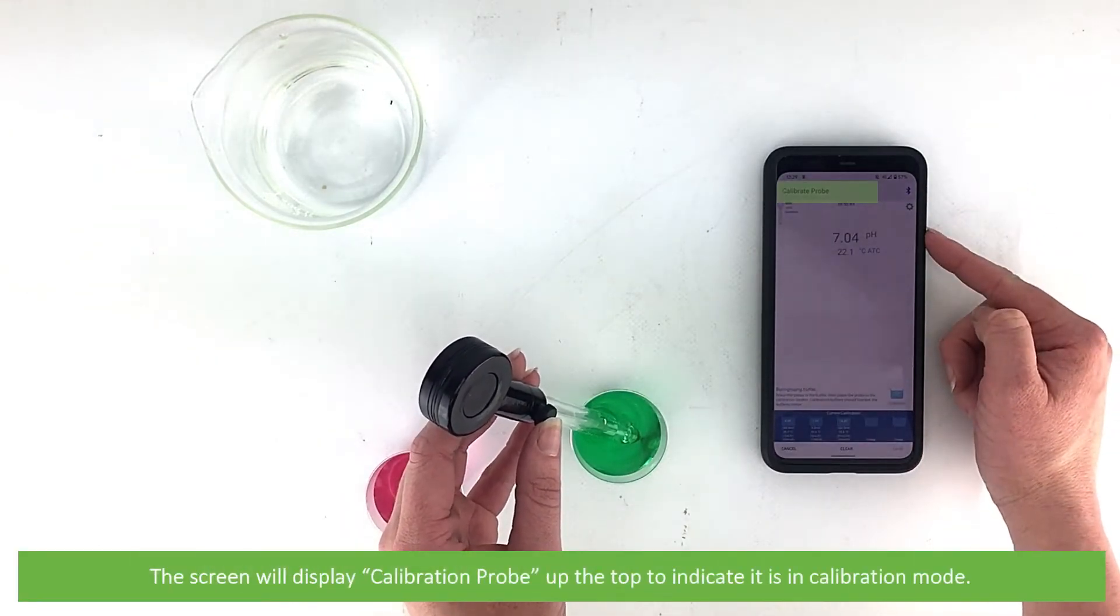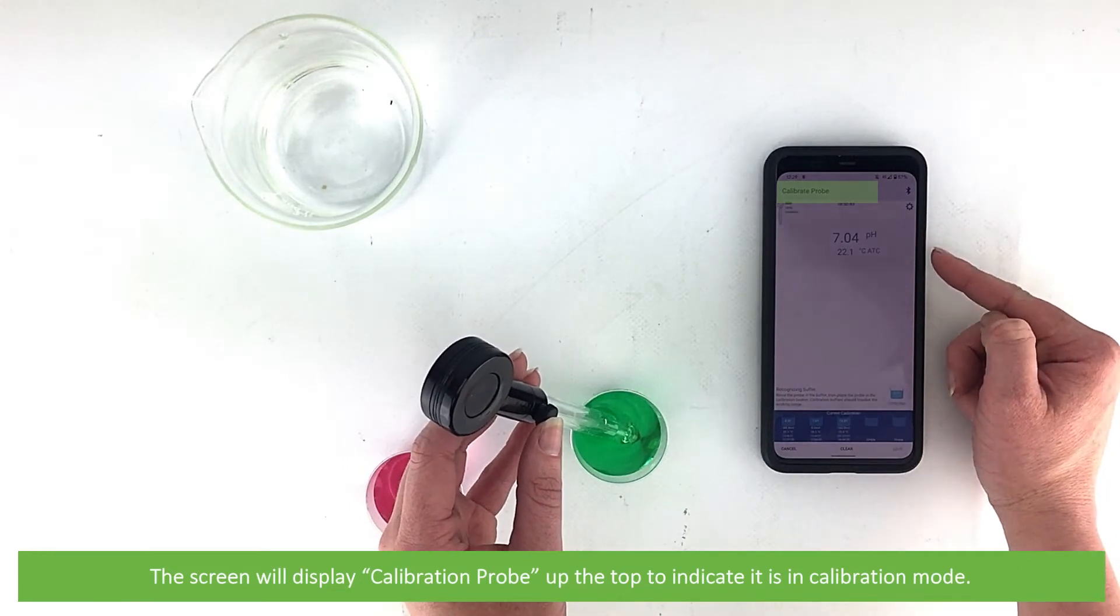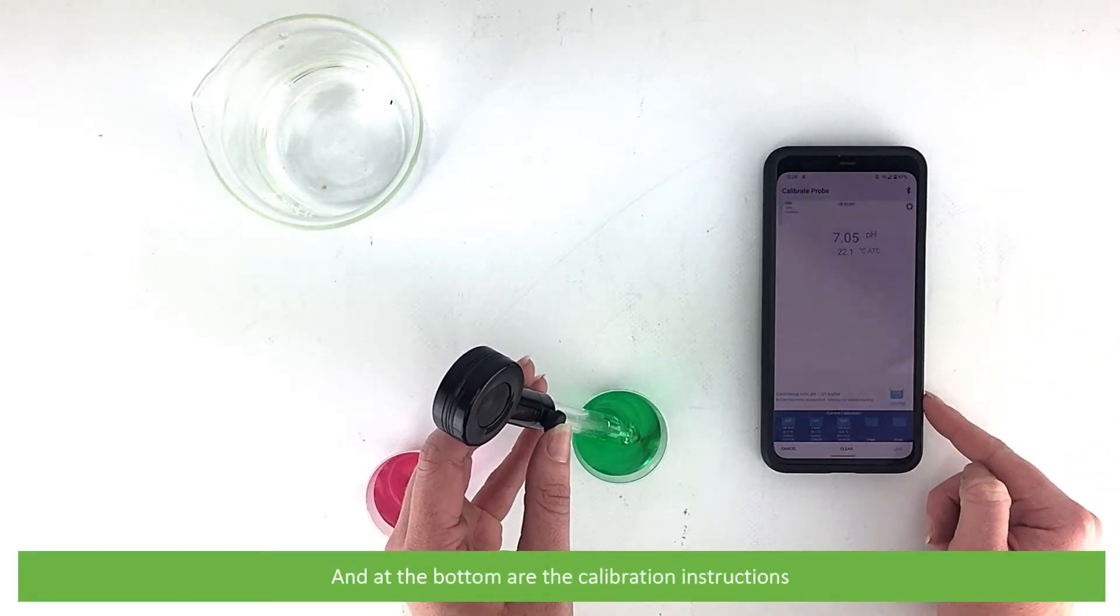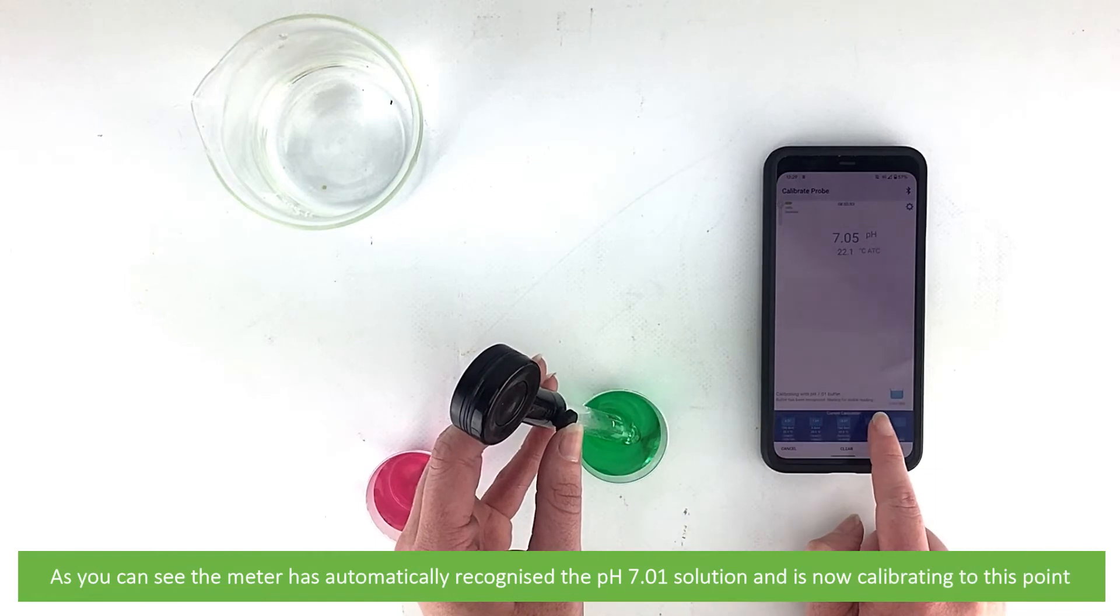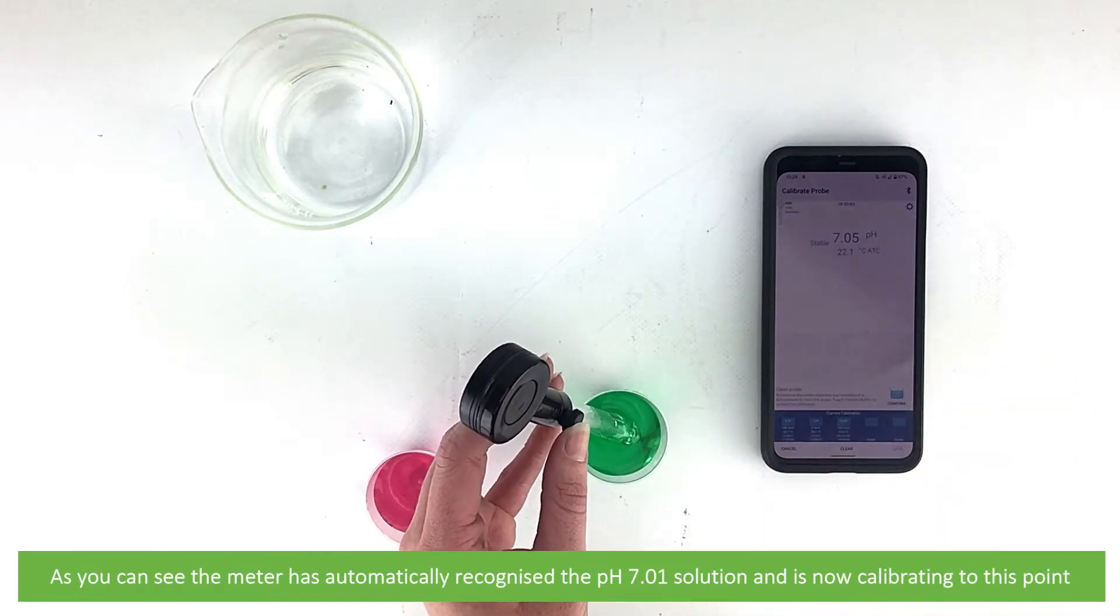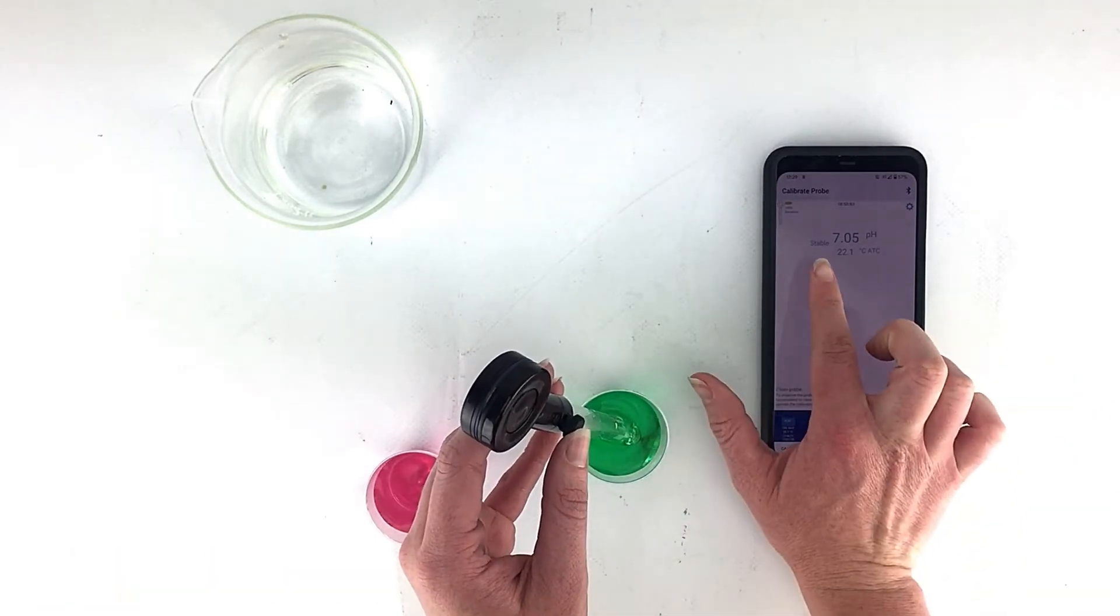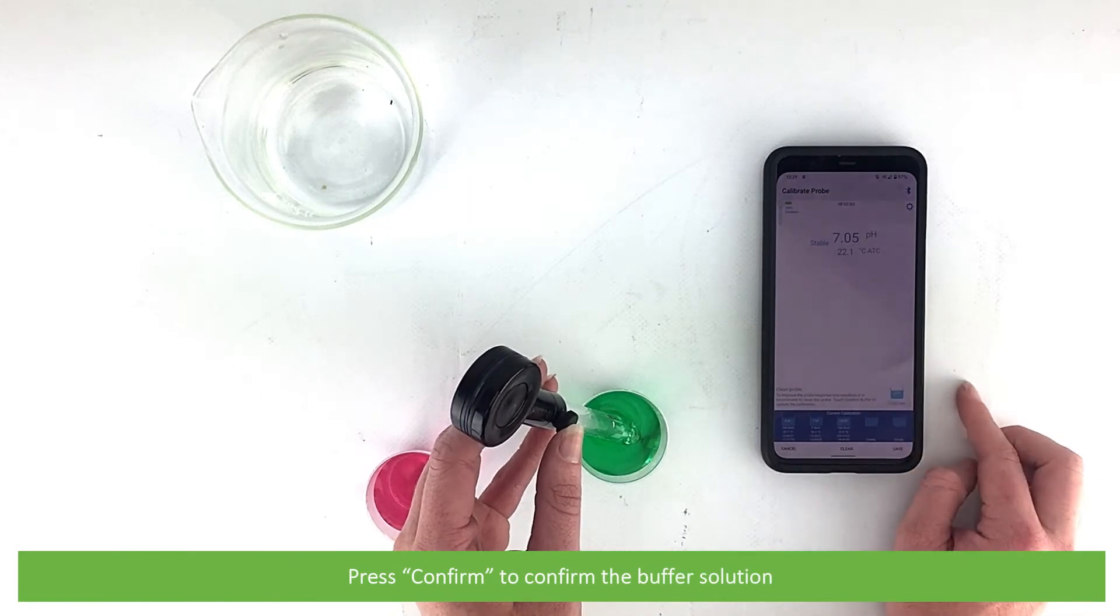The screen will display calibration probe at the top to indicate it is in calibration mode, and at the bottom are the calibration instructions. As you can see, the meter has automatically recognized the pH 7.01 solution. Press confirm to confirm the buffer solution.